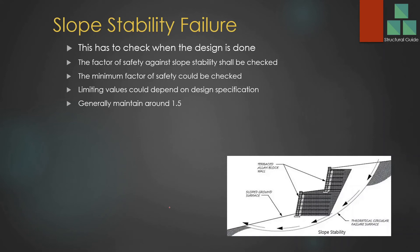Slope stability failure. Some retaining walls use an anchored method for stabilization. Slope stability refers to the scenario where a wedge of soil behind the wall tends to fail along a slip surface. Even though anchors are provided, if the failure wedge extends beyond the anchor zone, the anchors are not effective and a slope stability failure can occur along that slip line.